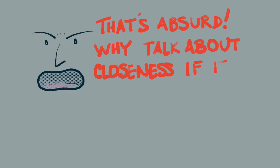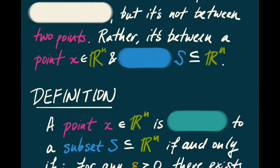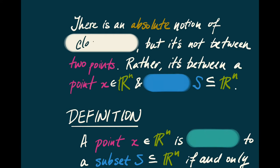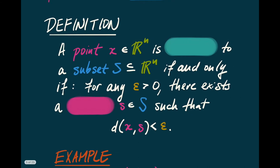That means the only absolute notion of closeness between points is equality. That is absurd — why are we talking about closeness if it's the same thing as equality? There is an absolute notion of closeness, but it's not between a point and another point of Euclidean space. Rather, it's between a point and a subset of Euclidean space. A point x in Rn is said to be close to a subset S of Rn if and only if, for every epsilon greater than 0, there exists a point s in S whose distance from x is less than epsilon.